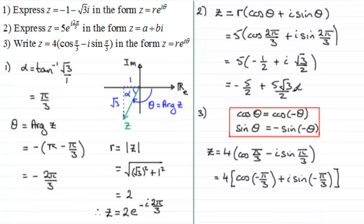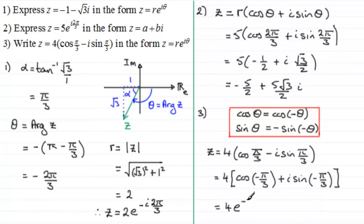This is now in the correct mod-arg form, which allows us to see that the modulus is 4 and the argument of z is minus π/3. So z can be written as 4e^(−iπ/3).